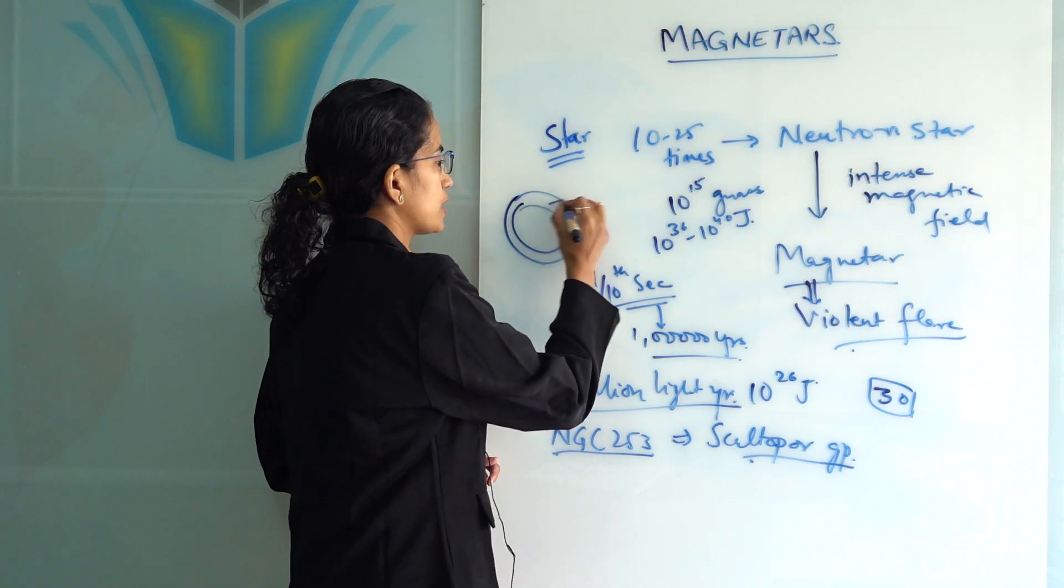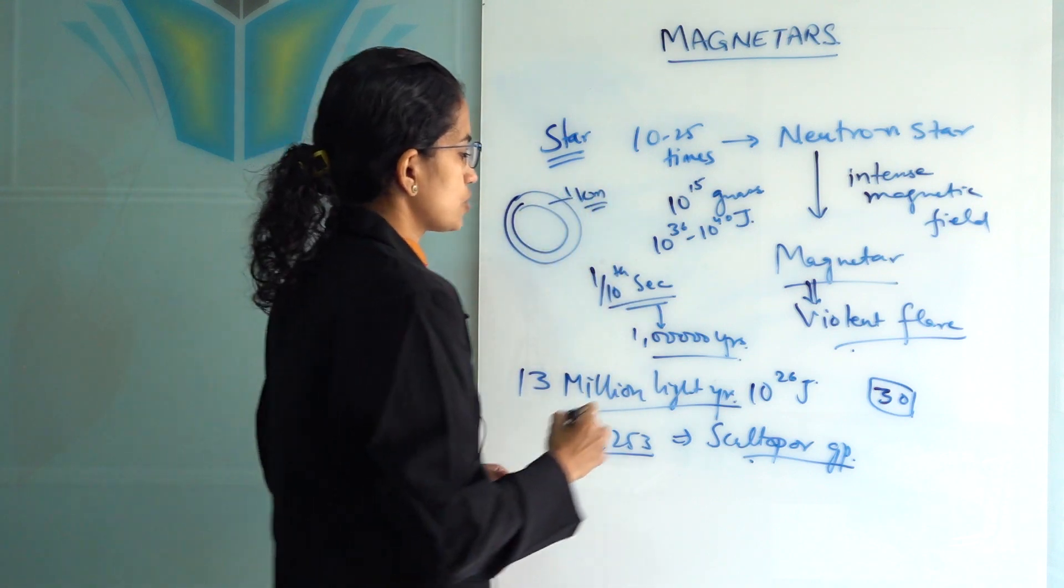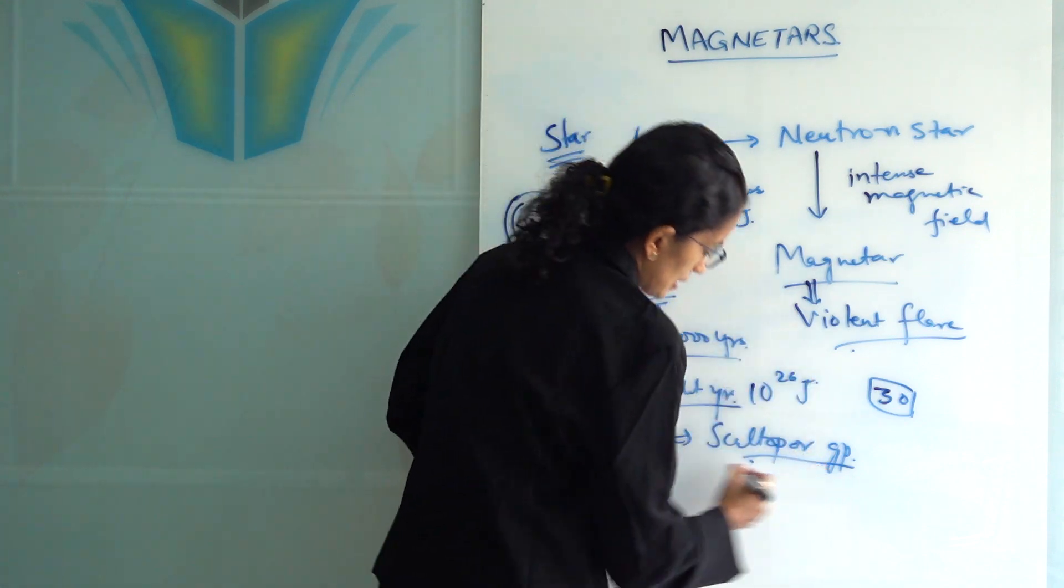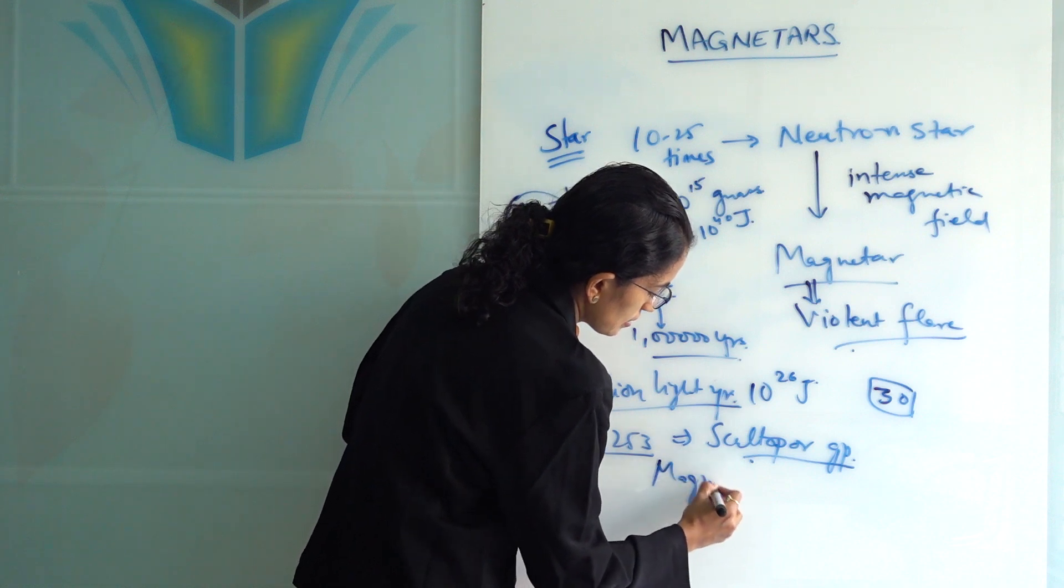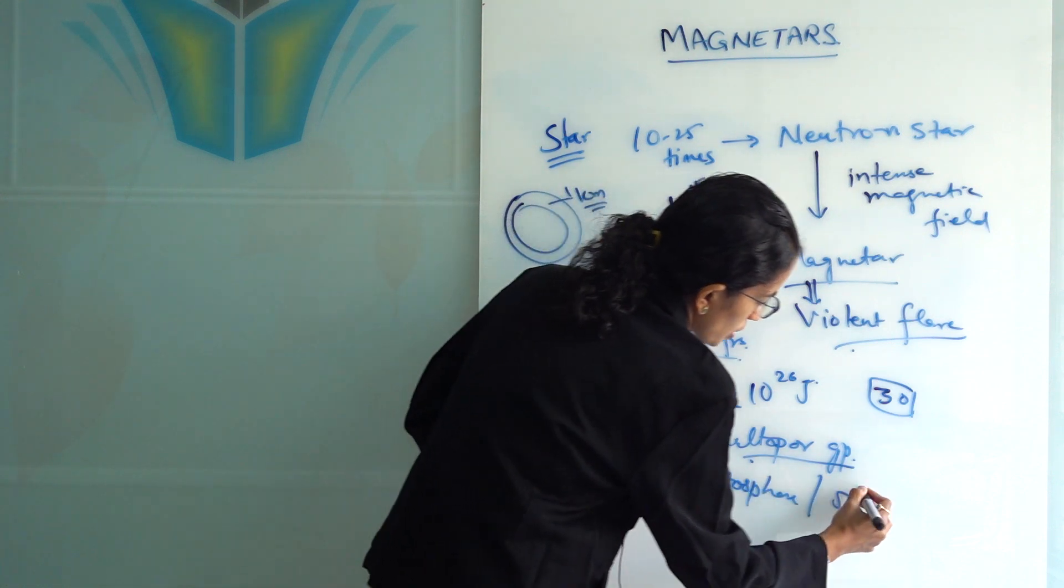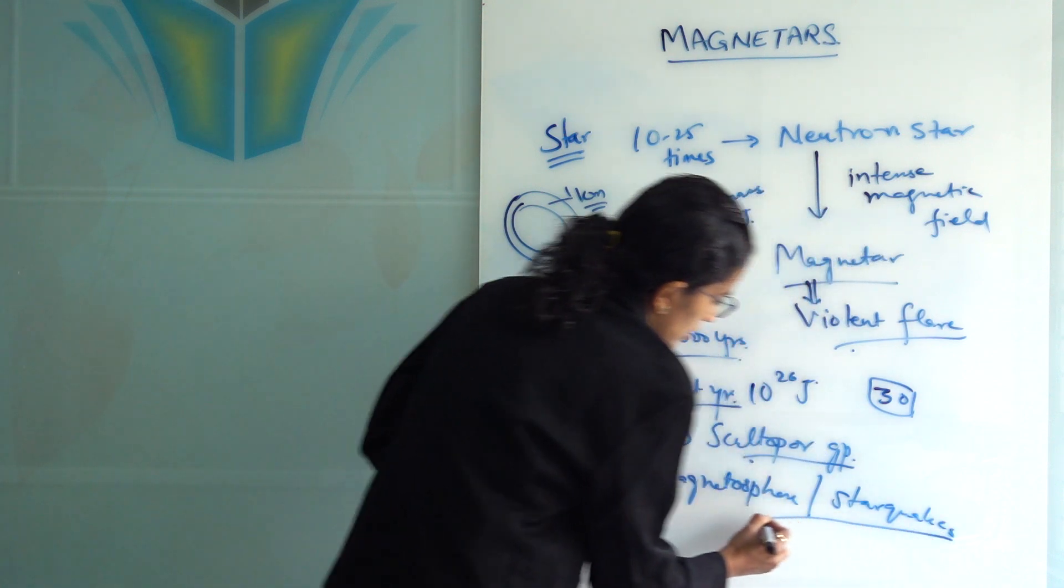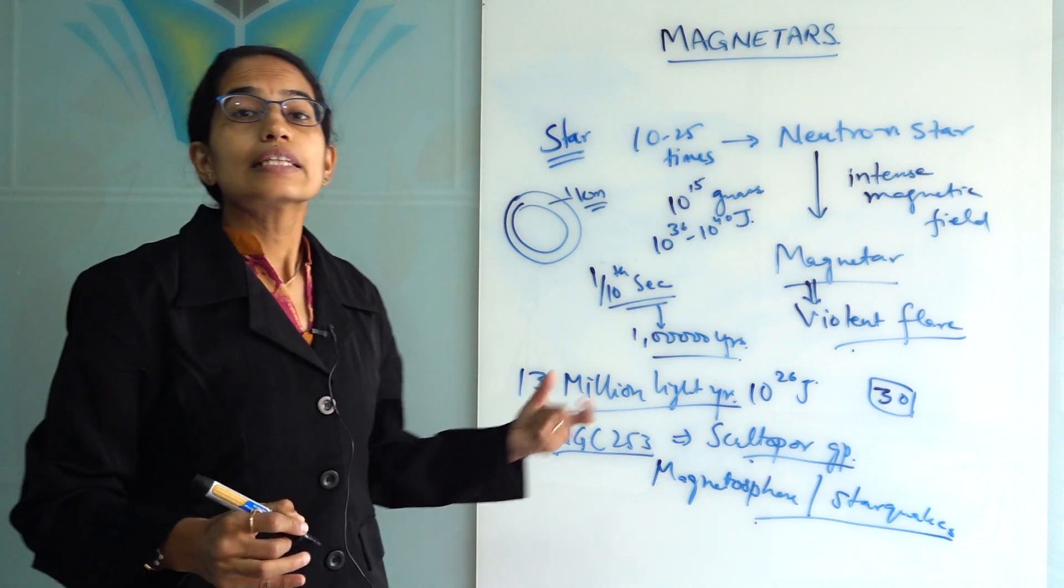The 1 kilometer thick outermost layer, which is known as the magnetosphere, and in this magnetosphere, or also what is known as the star quakes, there are disturbances or instability in the magnetic structure.